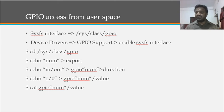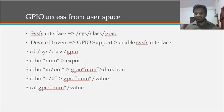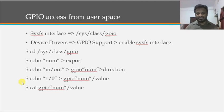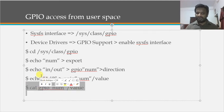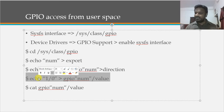Once we have done the export, we can configure the direction using the GPIO number and the direction file — either input or output. If configured as input, you can read back the value using cat on the GPIO number's value file. If configured as output, you can write one or zero to the corresponding GPIO. We will see this with an example.